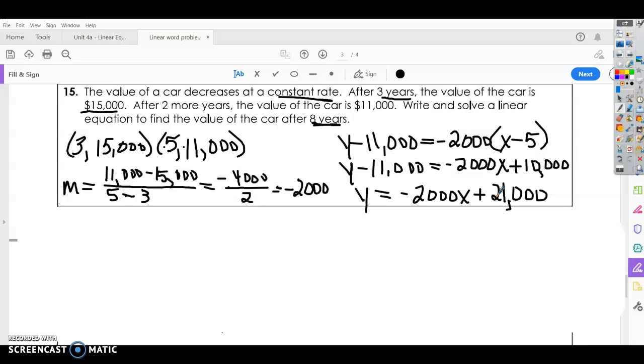Alright, so what does it say? It says, write and solve a linear equation to find the value of the car after 8 years. So after 8 years, 8 is our independent. So that goes in for X. Y equals negative 2,000 times 8 years. And then plus the $21,000.